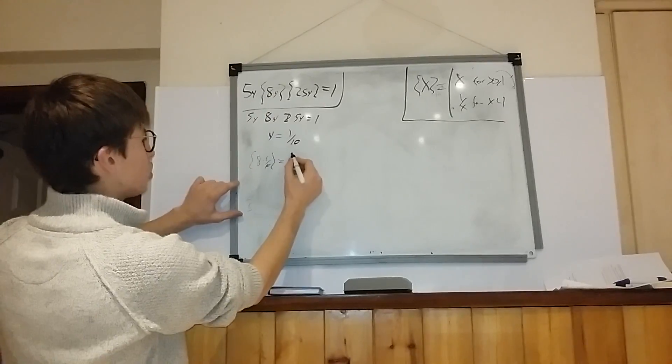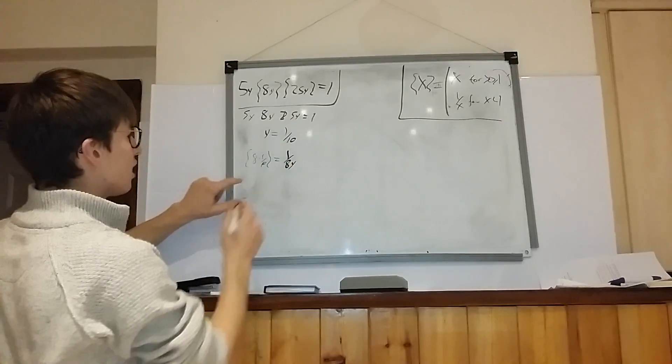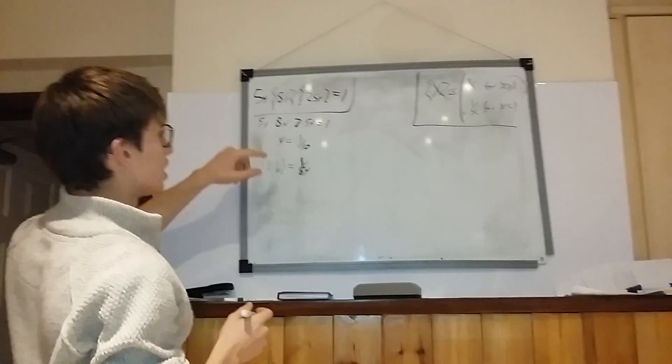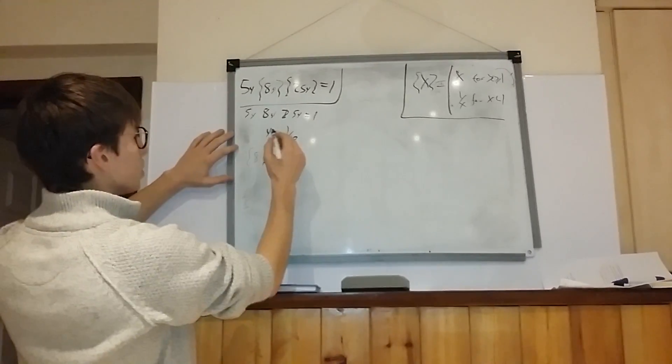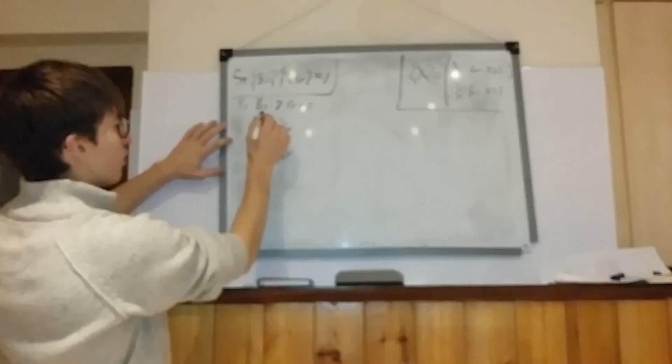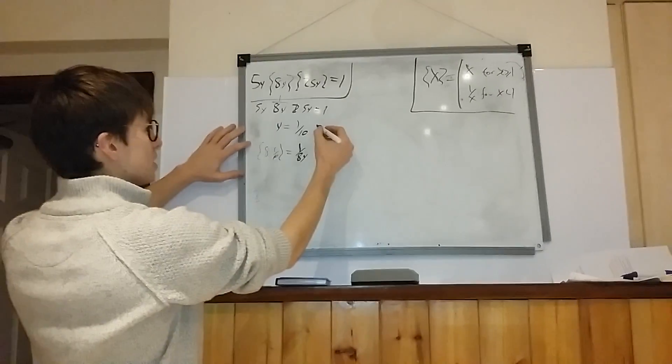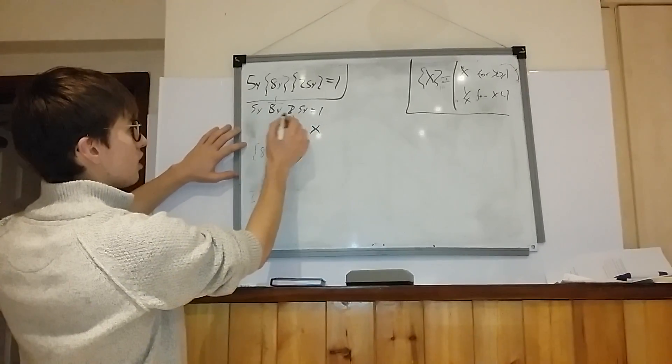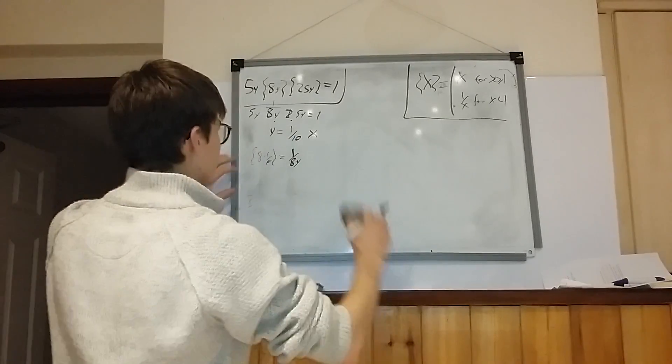So if you plug that in there, you should get 1 over 8y. And if you plug this into that one, you should get 25y. So clearly this solution doesn't yield this, but it yields 1 over 8y times that. So y is a tenth is not a solution and this combination of them doesn't work. So that's the first one.